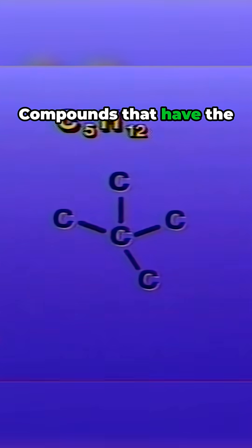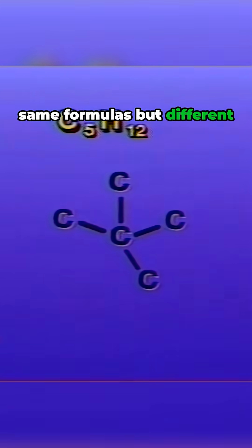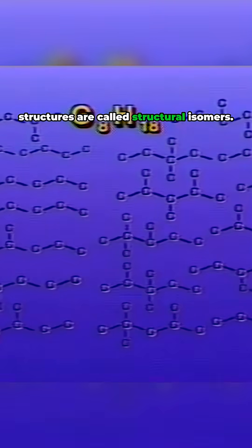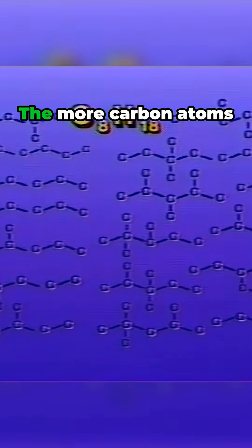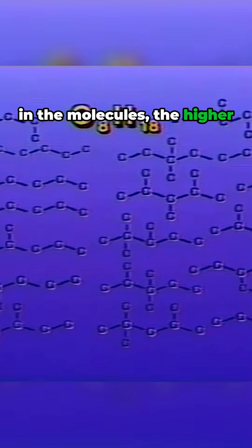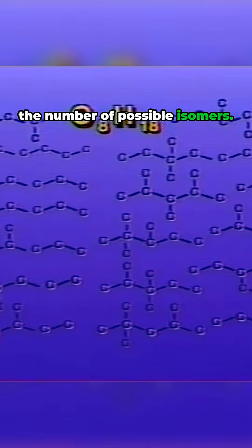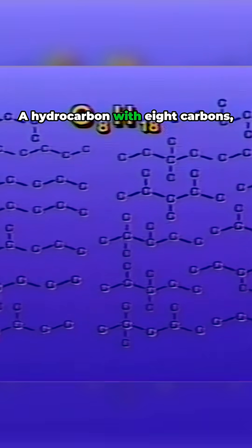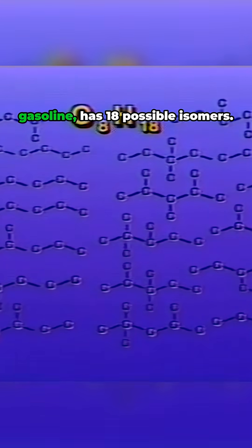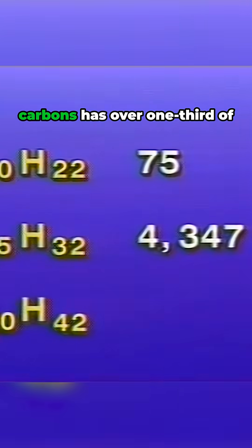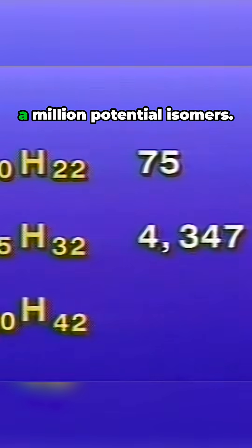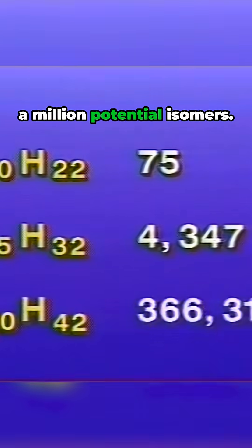Compounds that have the same formulas but different structures are called structural isomers. The more carbon atoms in the molecules, the higher the number of possible isomers. The hydrocarbon with eight carbons, octane — a major component of gasoline — has 18 possible isomers. A molecule with 20 carbons has over one-third of a million potential isomers.